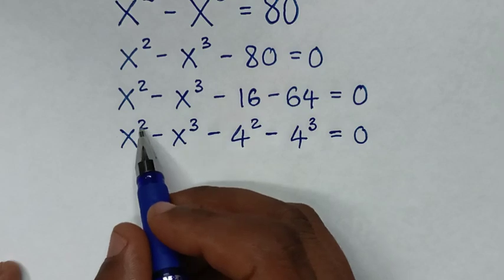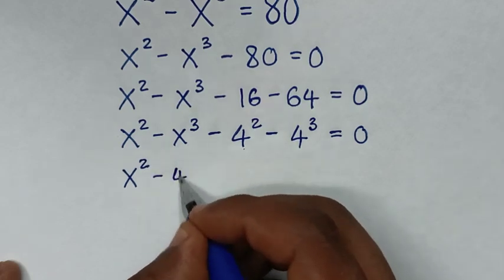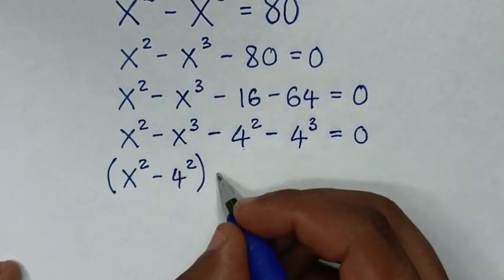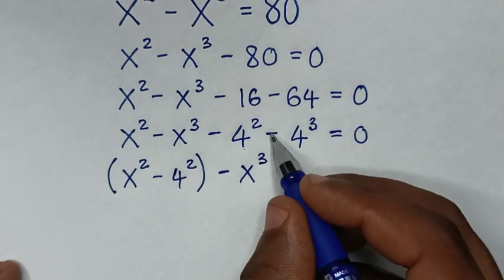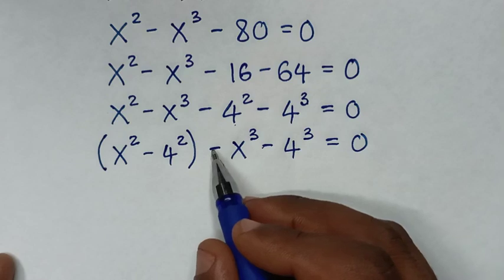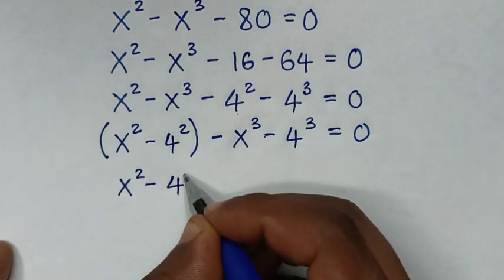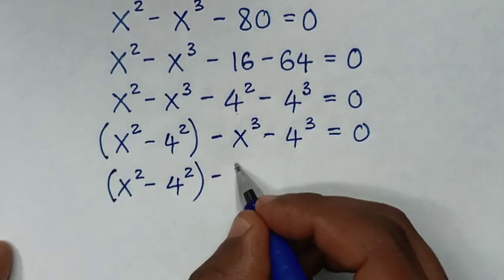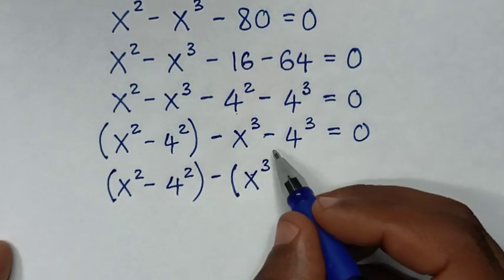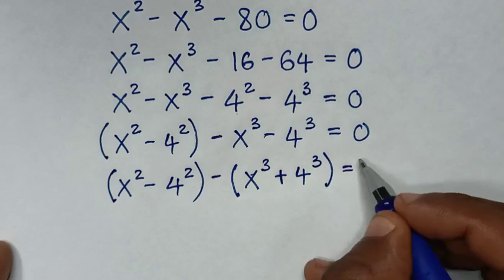So it will be x squared minus x cubed minus 16, same as having power 2, minus 64 to have power 3. 64 is the same as 4 cubed, is equal to 0. Then with same power 2 we place together, and with power 3 we have minus x cubed minus 4 cubed. Negative is common so we take negative out of the bracket, giving x squared minus 4 squared, minus (x cubed minus 4 cubed) equals 0.